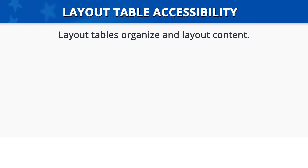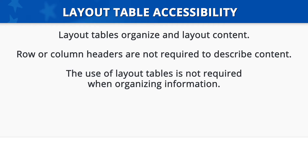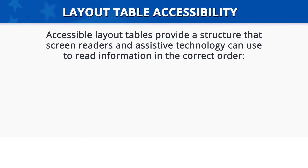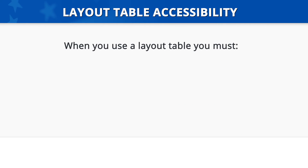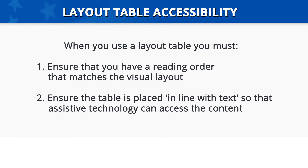Layout table accessibility. Layout tables are used to organize and lay out content in a document, so they do not require row or column headers to describe the cell's content. When using a table format, you must use the built-in table feature in Microsoft Word rather than creating the appearance of a table by using tabs or spaces. When created accessibly, layout tables provide a structure that screen readers and assistive technology can use to read information in the correct order — left to right and top to bottom. When you use a layout table, you must: one, ensure the reading order matches the visual layout; and two, ensure the table is placed in line with text so that assistive technology can access the content.